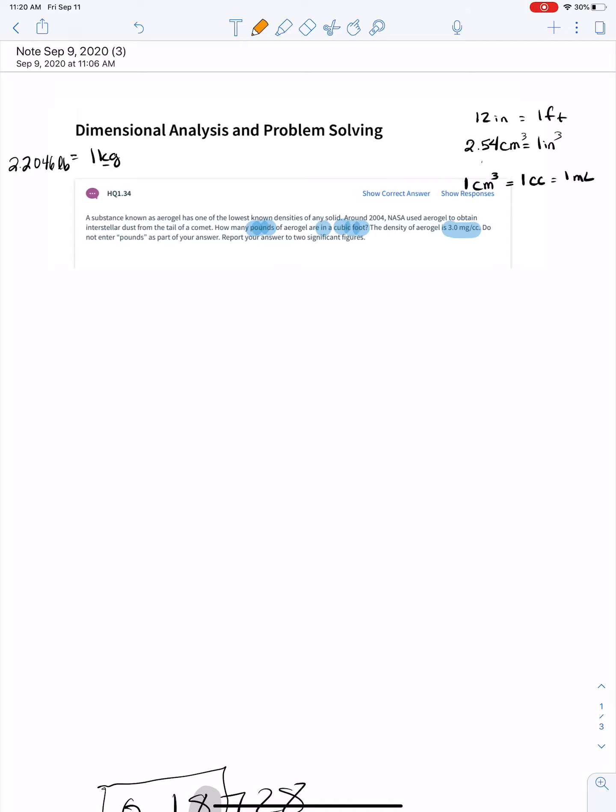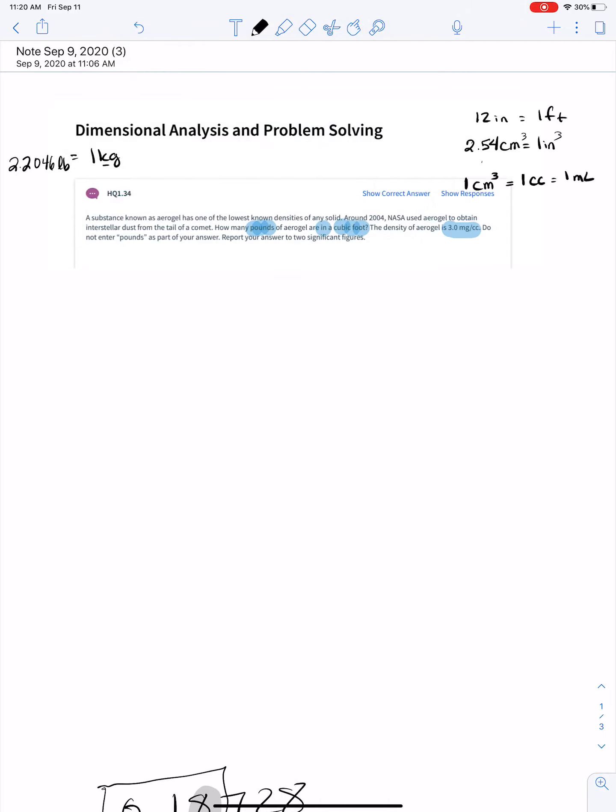So all these problems, make sure you know where you're going. So a pound per cubic foot is where you write ft with a cube. That's where you're going. And the only number you have to start with is this 3.0 milligrams in one cc.